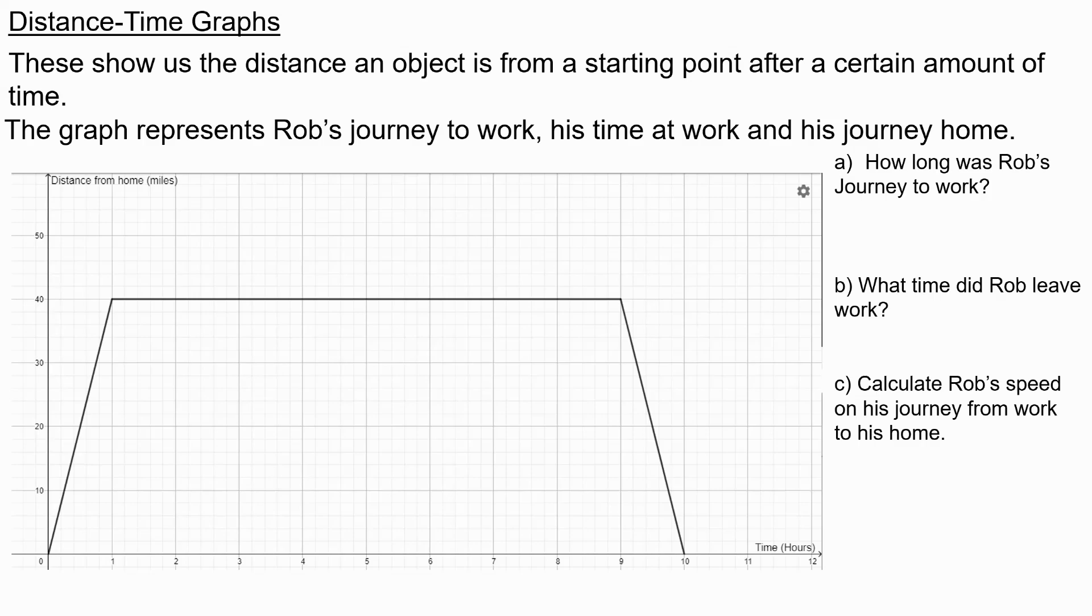In question A, we want to work out how long was Rob's journey to work. If we look at the graph, we can see there's this section where the graph at the start slopes upwards. This section represents Rob's journey to work, because as time goes on, his distance from home is increasing. We can see in terms of time, this is just one hour.